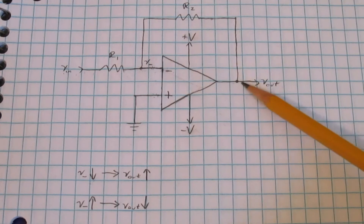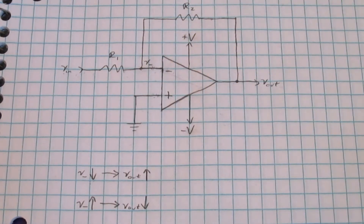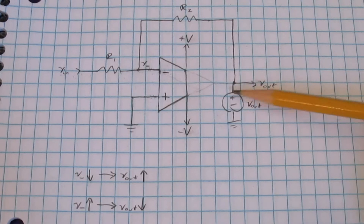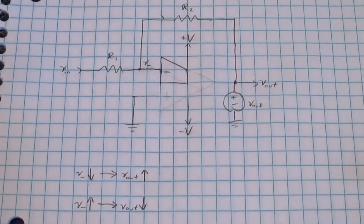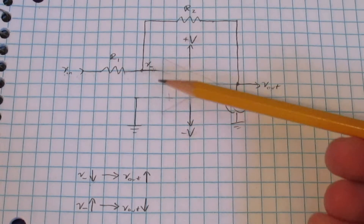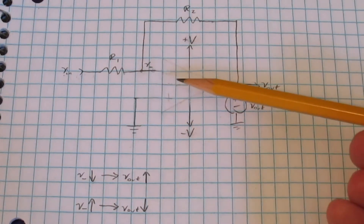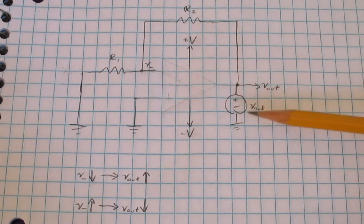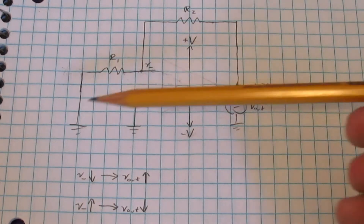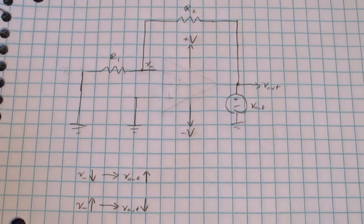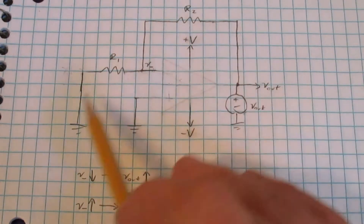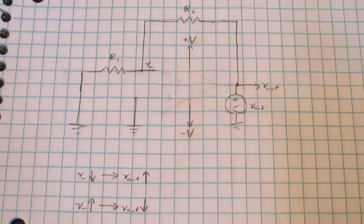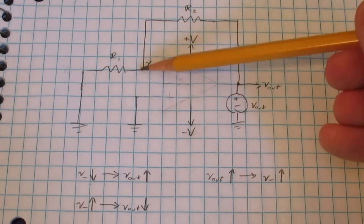Now, to find out how a change in the output will affect the input, we're going to do basically the same thing as in the positive feedback video. The output acts as an ideal voltage source because it has such a low output resistance. The plus input doesn't really matter since it's not connected to anything, and we pretend the minus input isn't there since it has such a high input resistance — it's not drawing or supplying any current. Using superposition, since we only care about how the output voltage affects V-minus, we pretend all other voltage sources don't exist. What we're left with is just a voltage divider. So as V-out goes up, V-minus goes up, and as V-out goes down, V-minus goes down.